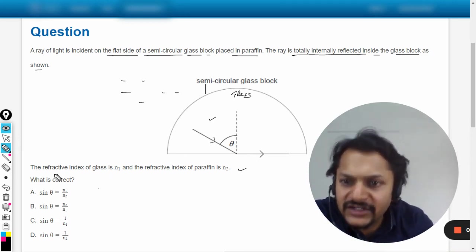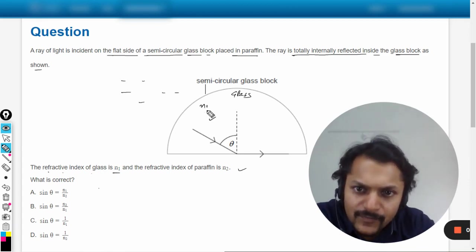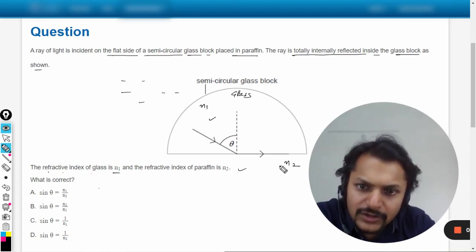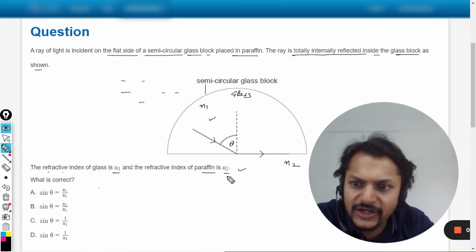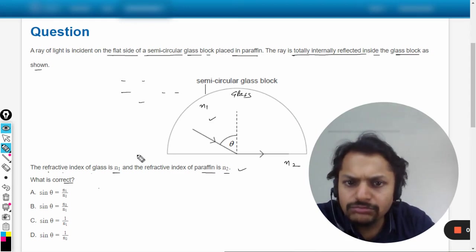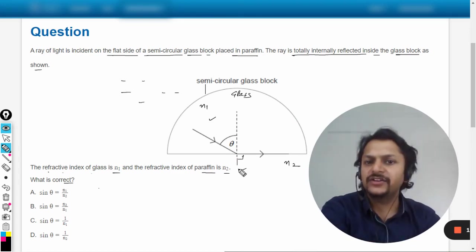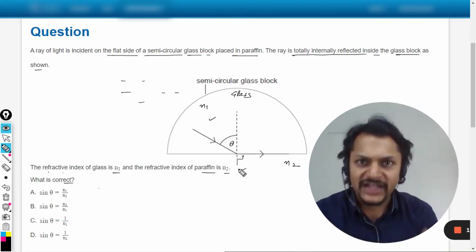Now moving next, the refractive index of the glass is n1 and for the paraffin it is n2. What is correct? So because it is like theta critical they're talking about and this angle, the refraction angle is 90 degrees. So you can also apply Snell's law here or you can directly go for the critical angle condition. I would be showing you both of things.